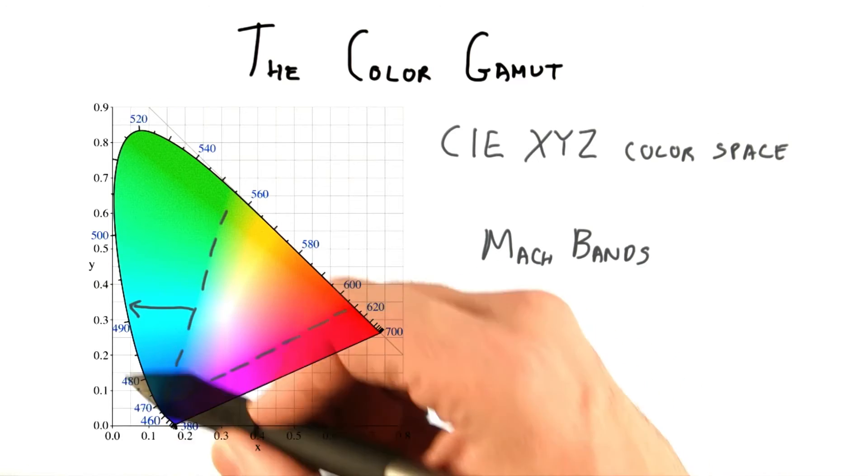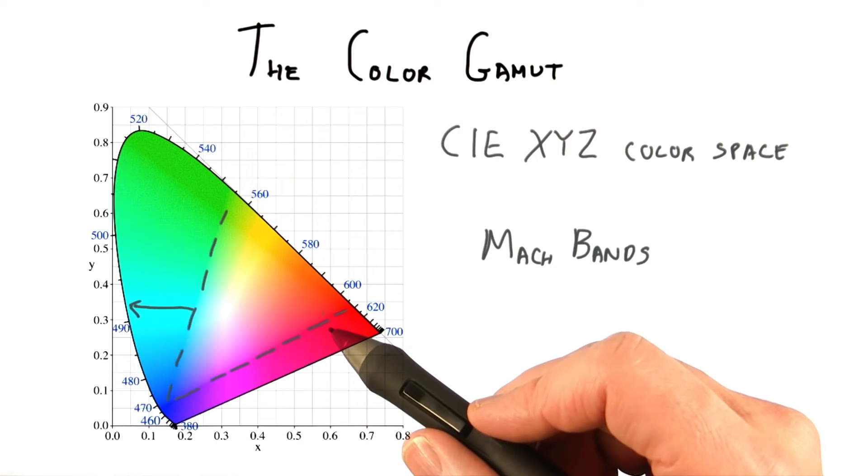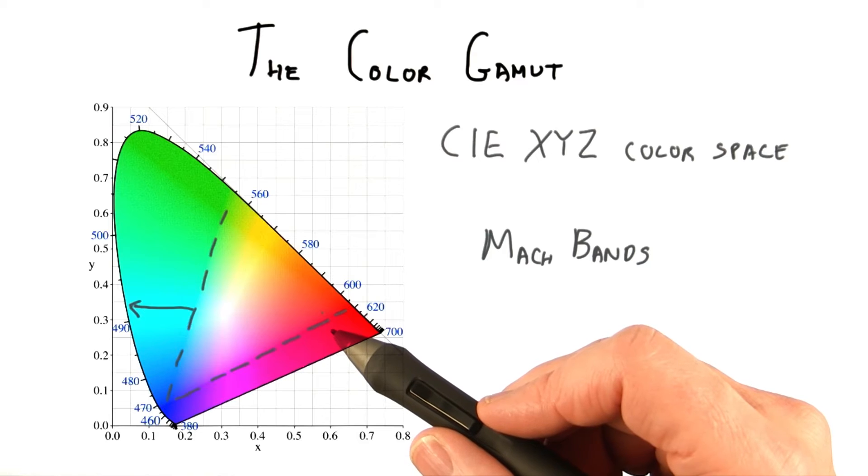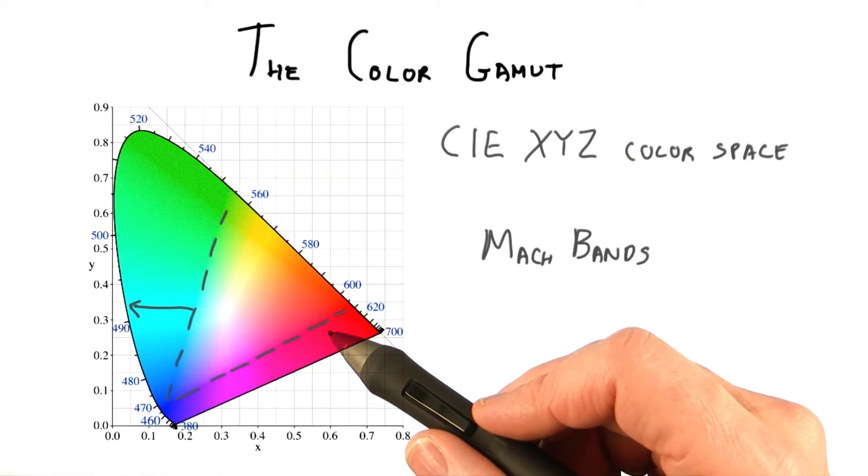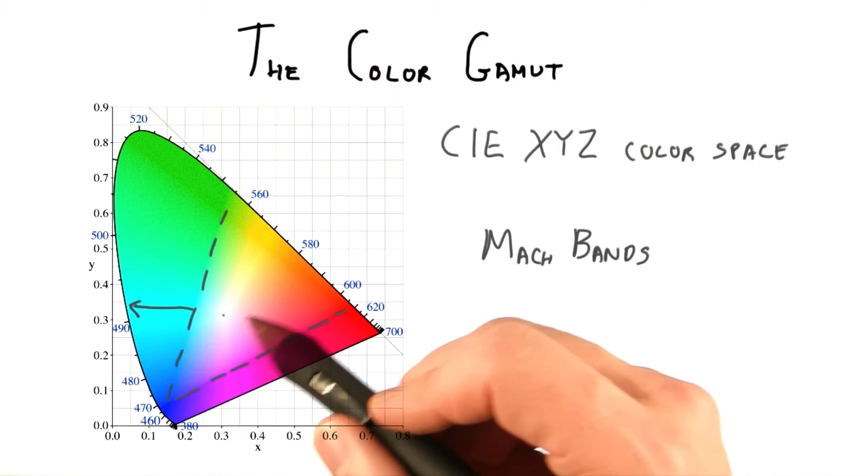It turns out that the pure spectral colors on this outer rim are not something a monitor can actually display. The pixels in a monitor each have a red, green, and blue component, and none of these components is a pure spectral color, but rather a mix of differing wavelengths of light.